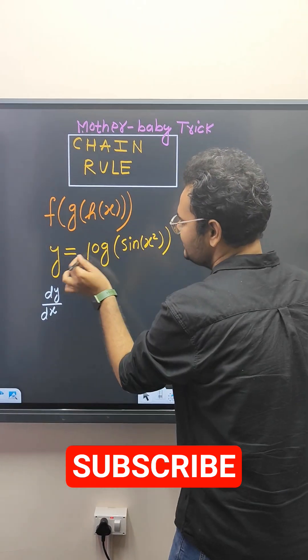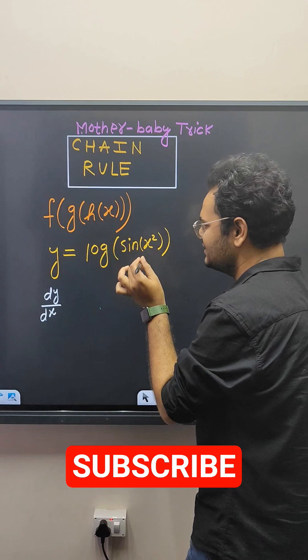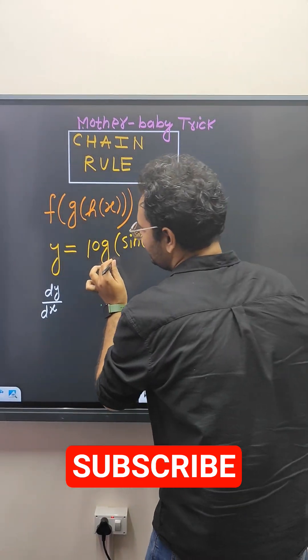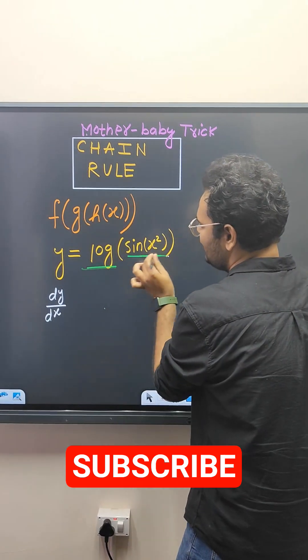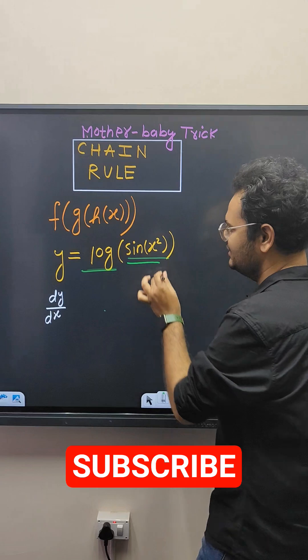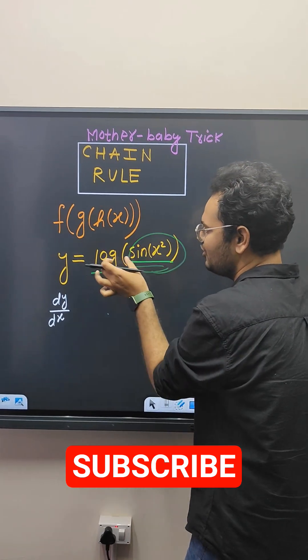What I mean? Look here, y equals log of sine of x square is our function. Here, log is mother and sine of x square is baby. This entire function is baby of this mother.